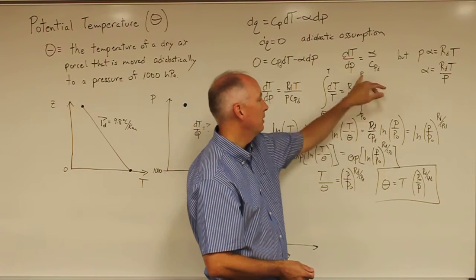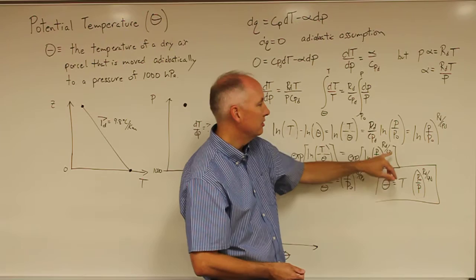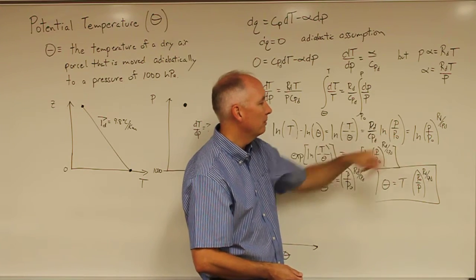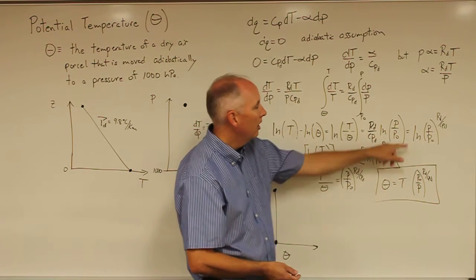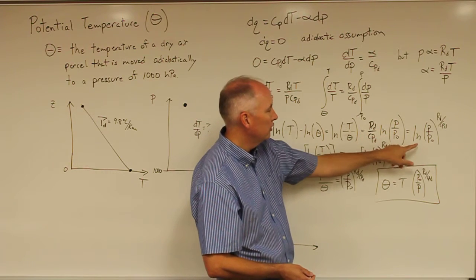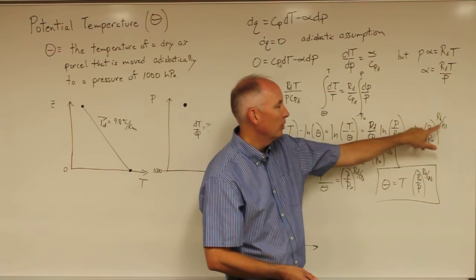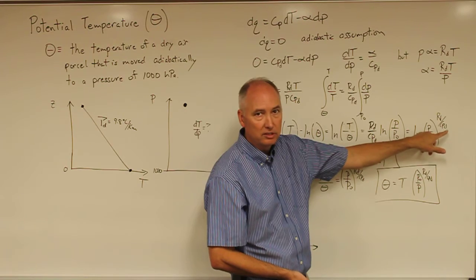And the integral on the right-hand side is R sub D over C sub PD. The natural log of P minus the natural log of P0 is equivalent to the natural log of P over P0. And then this is also equivalent to the log of P over P0 raised to the R sub D over C sub PD power.